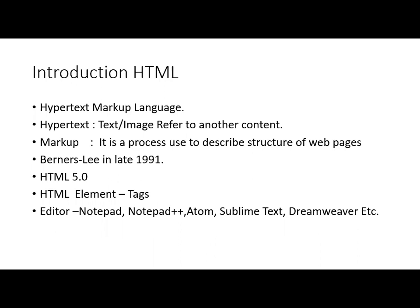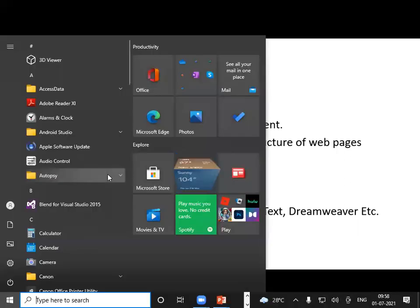HTML consists of tags. Tags have two types: predefined tags and user-defined tags. Predefined tags have a particular meaning — for example, the p tag is for paragraph, b tag for bold, i tag for italic, and u tag for underline. We represent tags in angle brackets — for example, the underline tag uses the u tag.